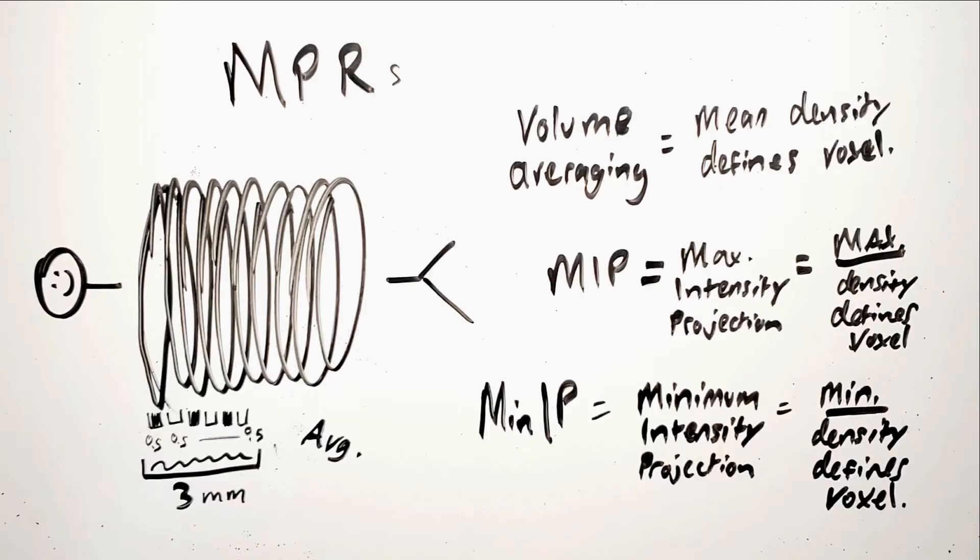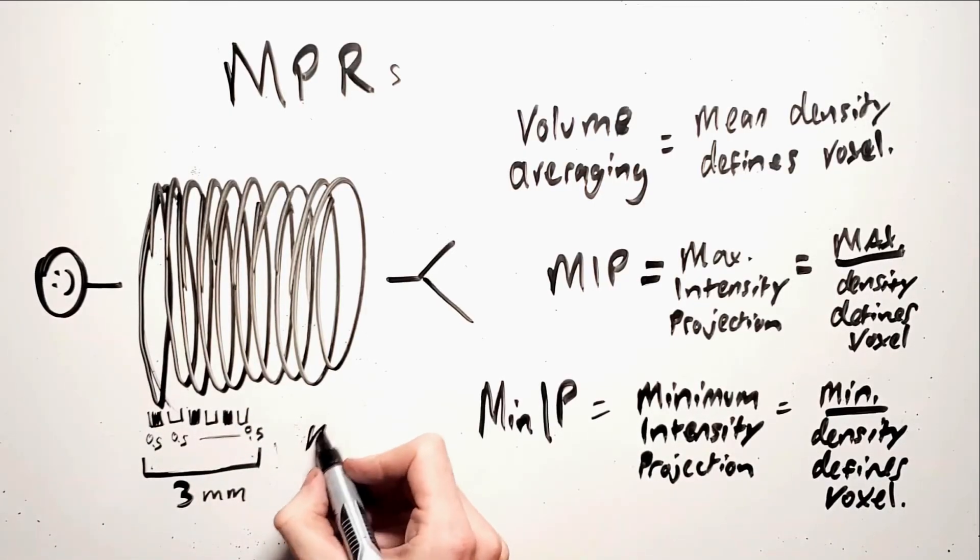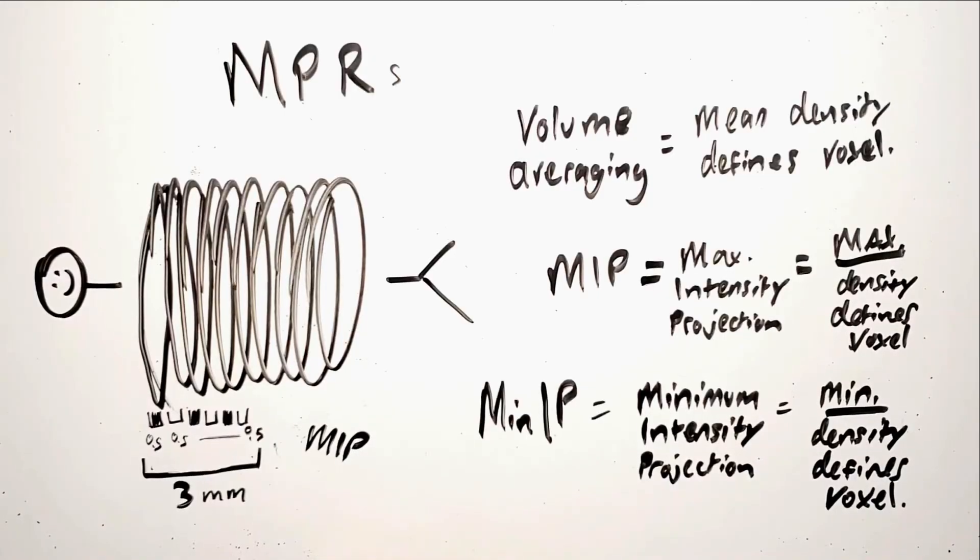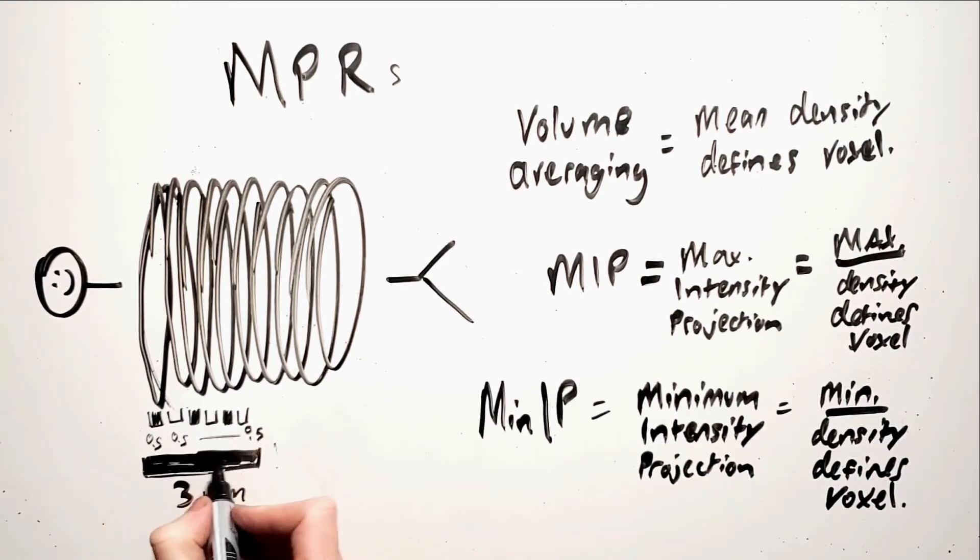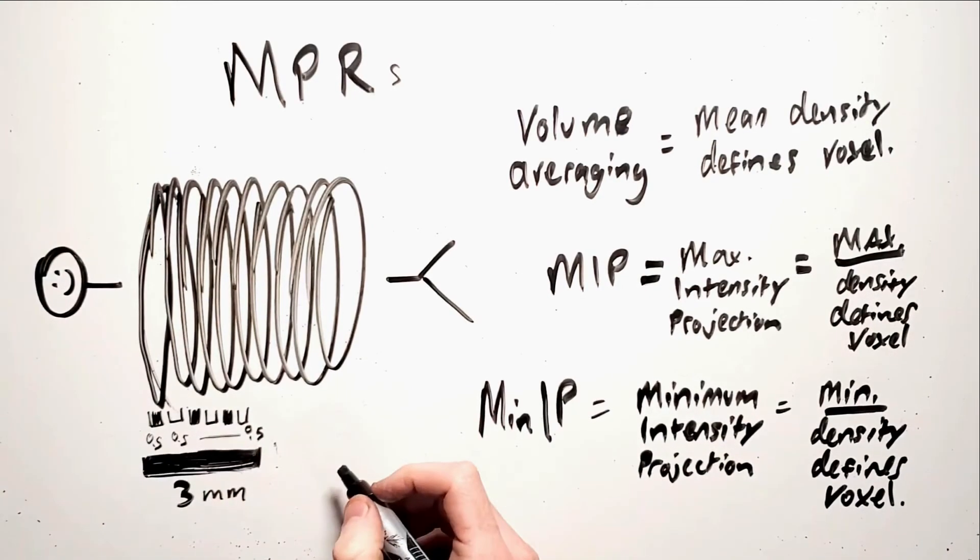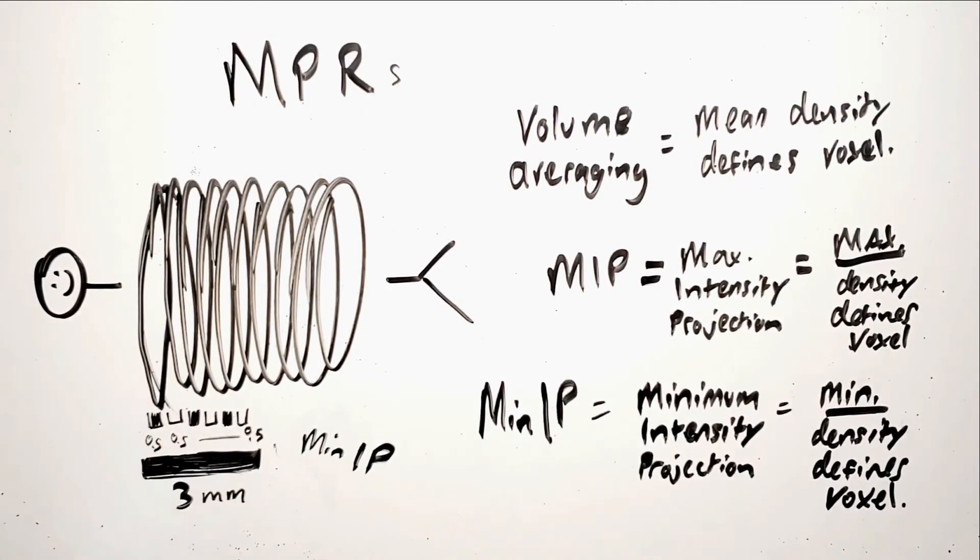This isn't the only way to render that data however. We could also take the maximum value represented within that 3mm volume and take that maximum value to represent the whole voxel. This is called a maximum intensity projection or a MIP. Similarly we could take the minimum value represented within this volume and take that to represent the whole voxel. This is called a minimum intensity projection or a MIN-IP.